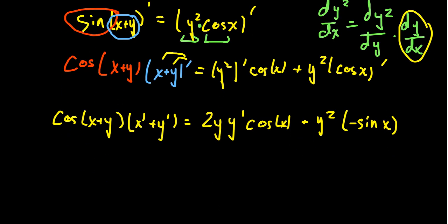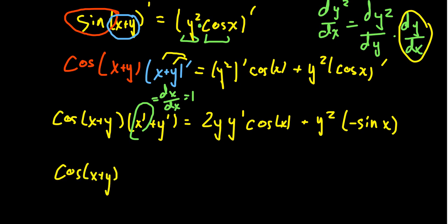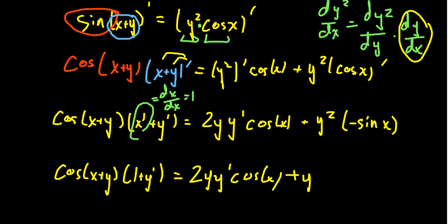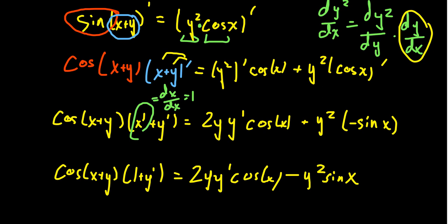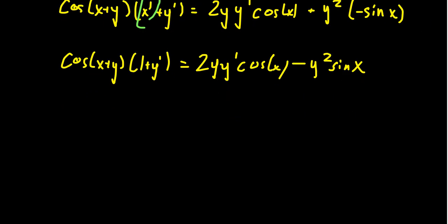Notice x prime — the prime notation just means take the derivative with respect to x, so dx over dx is 1. The y primes we'll leave alone for now. In complete simplified form, the left-hand side becomes cosine of x plus y times 1 plus y prime. The right-hand side looks like 2y·y prime·cosine of x minus y squared·sine of x. Now we've calculated all of these derivatives — there's no more calculus here. The rest of this problem is purely algebra: we need to solve for y prime.